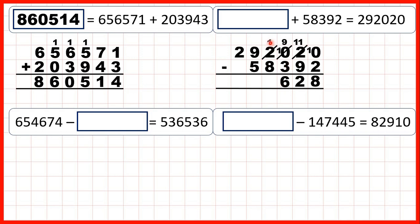We can't do 1 minus 8 using the column method, so we go to the left, 1 less 1 in front, 11 minus 8 is 3, 8 minus 5 is 3, and 2 minus nothing is 2. So our missing number is 233,628.